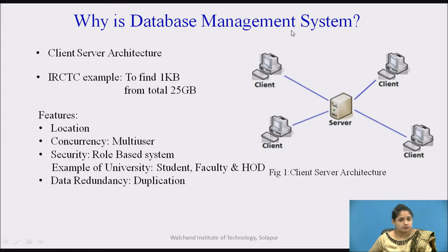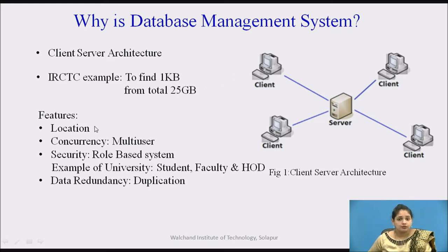Now we'll see the features of DBMS compared to the file processing system. The first feature is location. In a file processing system, to access a file you must know its location — like searching on your PC, knowing the local drive, folders, and subfolders. But in DBMS, you do not need to know the location of your file. For example, when you open YouTube and search for any video, you don't need to know the location of that video — you simply search and access it.